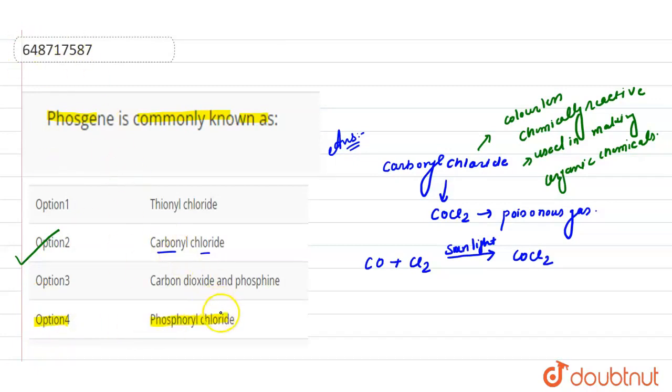Phosphoryl chloride, it is commonly known as phosphorous oxychloride. And it has formula that is POCl3.